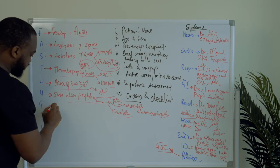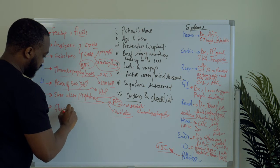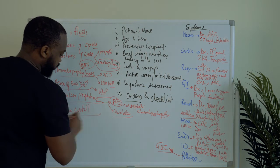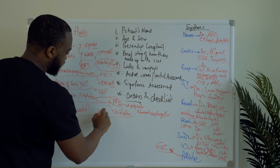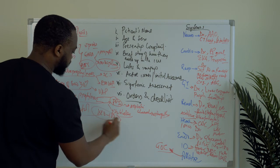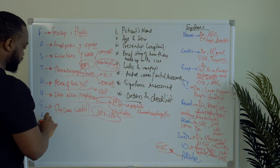G represents glycemic control. Talk about what you're doing — again, for most septic shock patients, the NICE trial goal is 140 to 180.